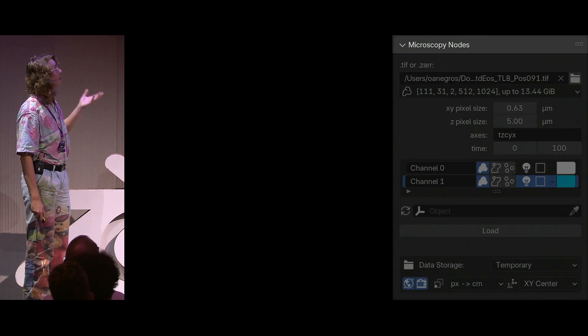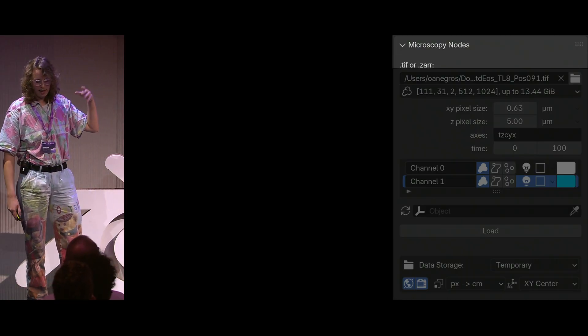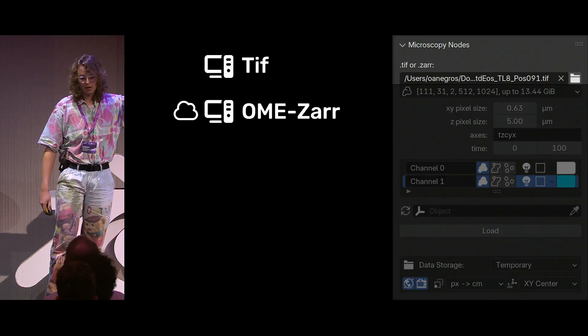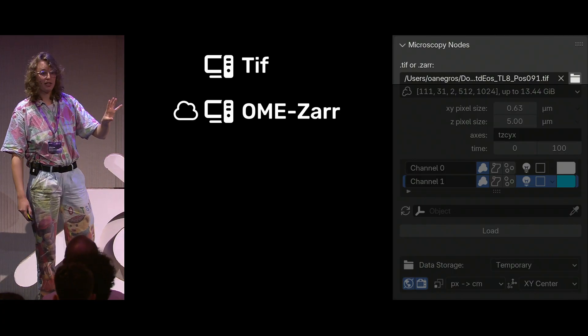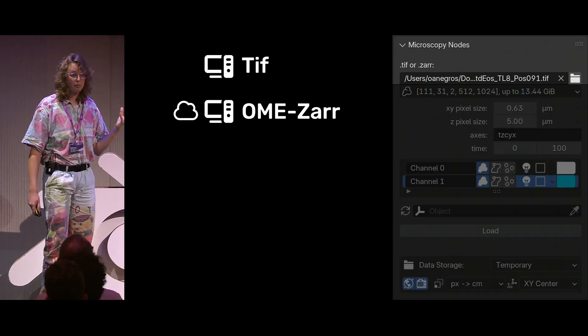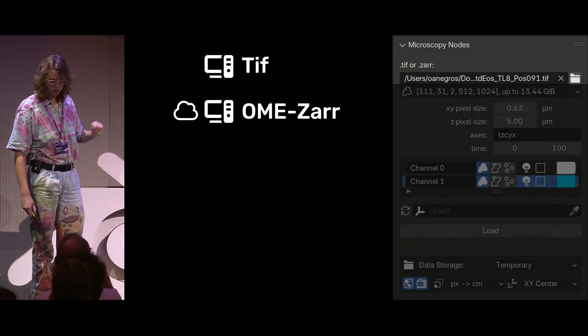So this is a panel that exists in the scene properties. And the first thing you kind of do in there is you load a data set, and that can be from two different formats. That's either a TIFF, which everybody has. It's a very easy format. And then OME-ZAR, which is this developing format that can also live on the cloud, and it has a bunch of other really neat features that I'll kind of touch upon.